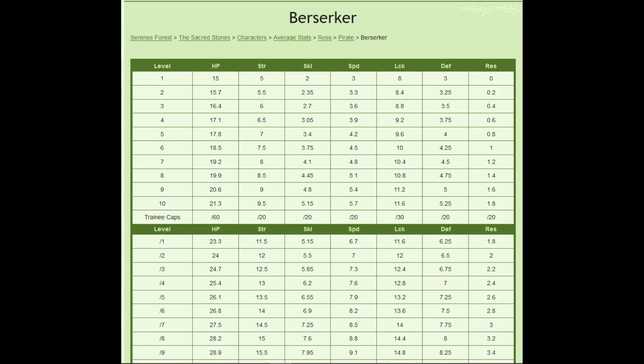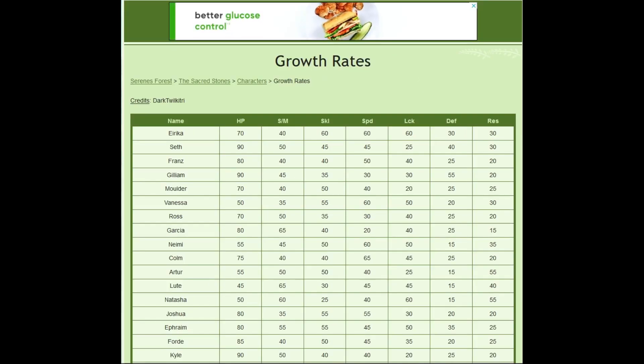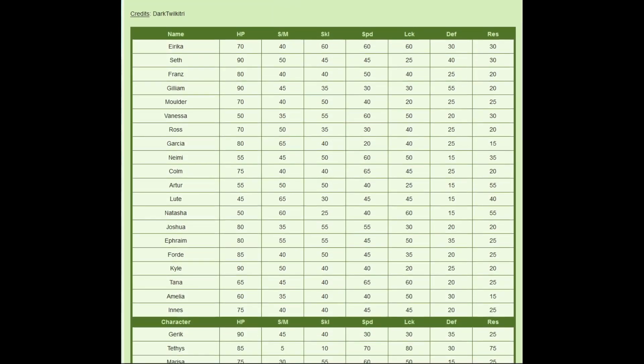So what do I mean? In Fire Emblem, in most games, you have a random chance for every stat to increase, known as growth rates. As you can see over here, I have the growth rates for Sacred Stones characters pulled up. Ross, for instance, he's going to be subject to much of this discussion, has 70% HP, 50% strength, 35 skill, 30 speed, 40 luck, 25 defense, 20 resistance. So every single level up, he has these chances for stats to increase.